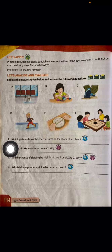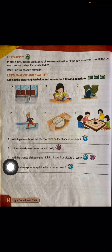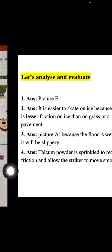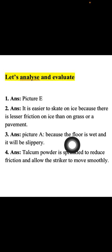Question number three: Will the chance of slipping be high in picture A or picture C, and why? The answer is picture A, because the floor is wet and it will be slippery — friction is less. In picture A there is a sign showing the floor is wet, so the floor is slippery and friction is less, which means the chance of slipping is high in picture A.